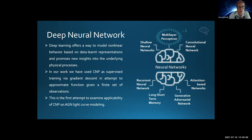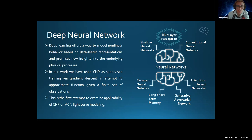Deep learning offers a way to model nonlinear behavior, and neural networks have shown good results in modeling stochastic data. Building on previous tools based on Gaussian processes for AGN light curve analysis and modeling, we have developed CNP as supervised training in attempt to approximate a function given a finite set of observations. This is the first attempt to examine applicability of conditional neural process on AGN light curve modeling.